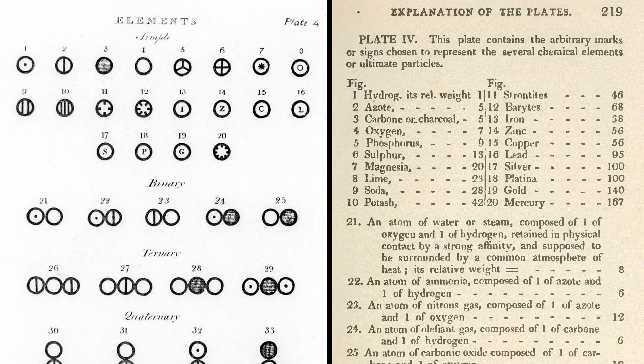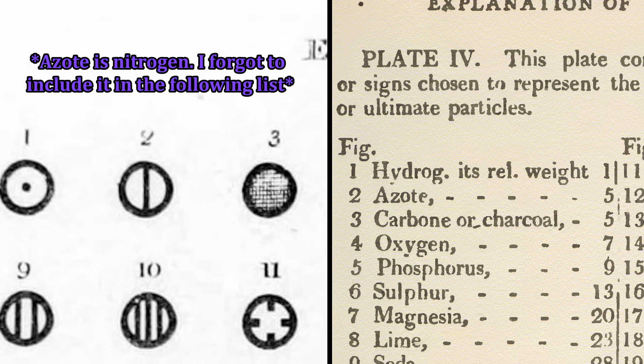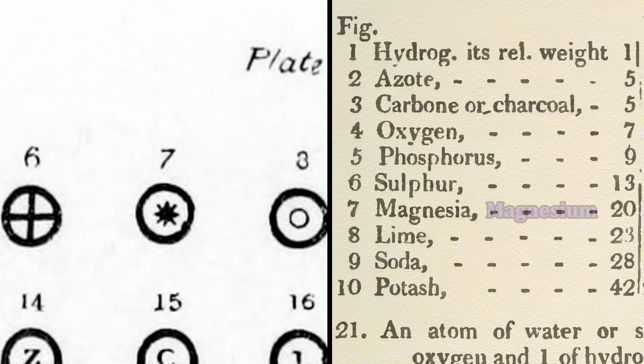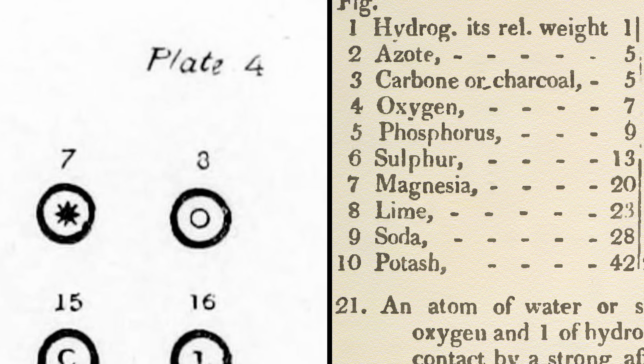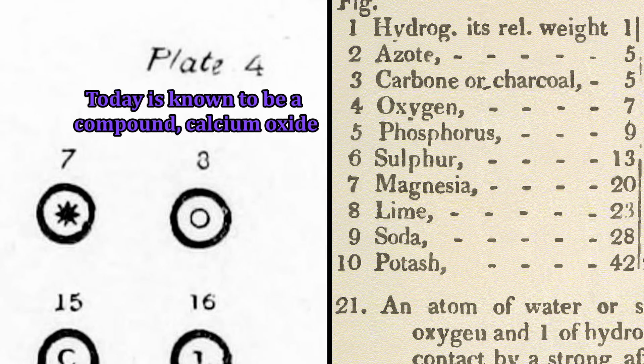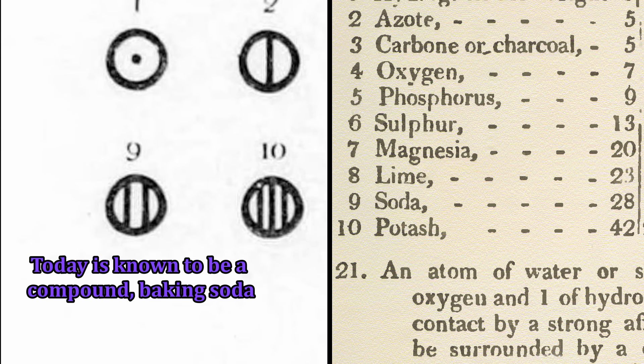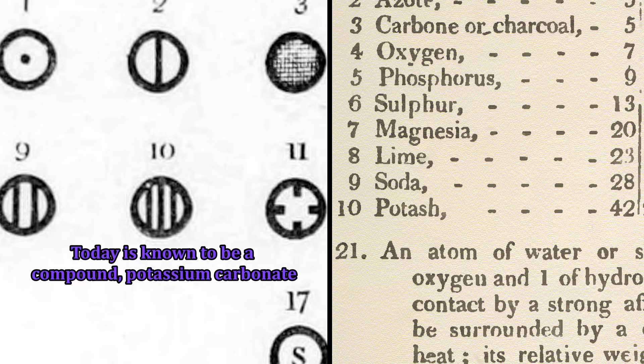The elements Dalton listed are labeled on the following page, along with their weights. Terminology differs today from when Dalton's work was published, so rough translations are as follows. Magnesia is magnesium. Lime is actually a compound, calcium oxide, but more than likely what Dalton was referring to here was just the element calcium. Soda is also a compound, baking soda, but Dalton was most likely referring here to the element sodium. Potash resembles potassium carbonate, but Dalton was most likely referring to potassium here.